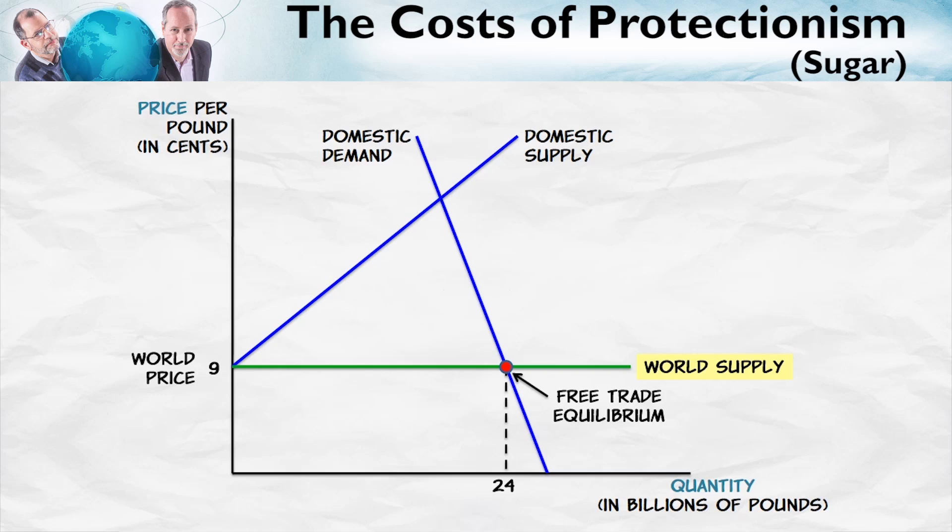It's simply much more expensive to produce sugar in Florida than in a country such as Brazil. The opportunity cost of land is very high in Florida, and the climate is not ideal for growing sugar, so you have to invest more real resources to produce sugar in Florida than in Brazil. So if we had complete free trade, there would be no domestic supply.